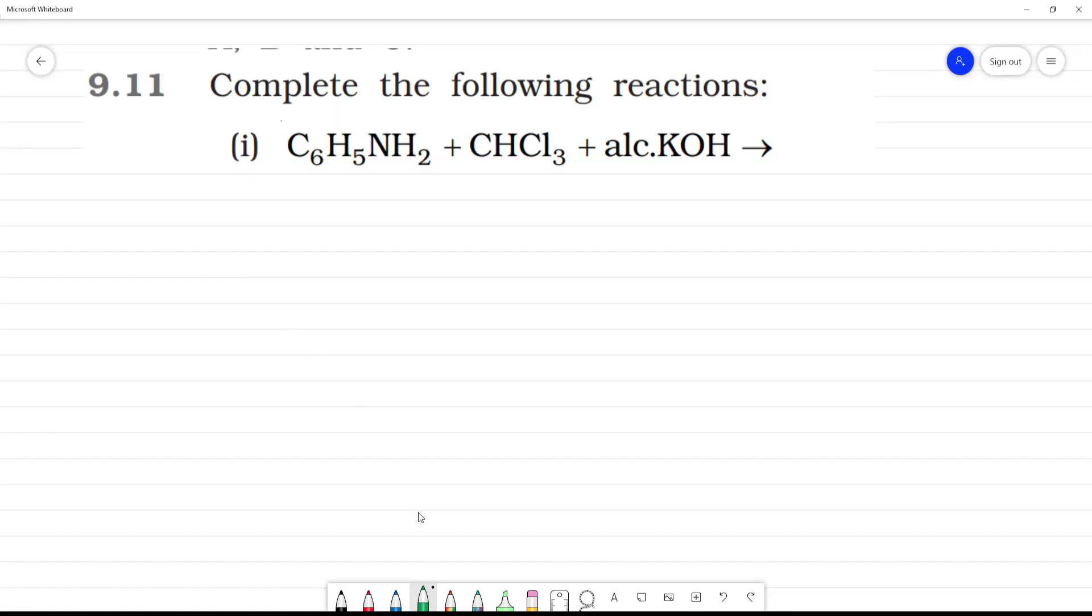Complete the following reactions. First one, what is this? C6H5NH2 is aniline. C6H5NH2.